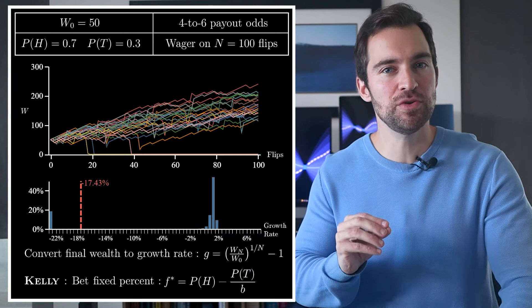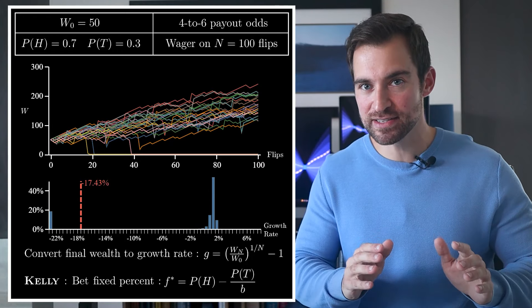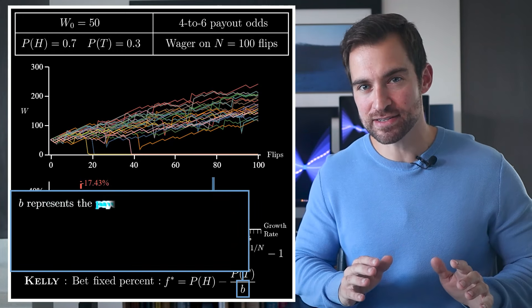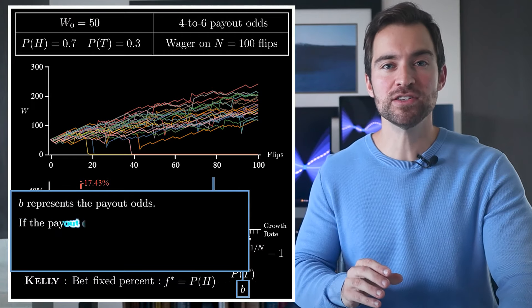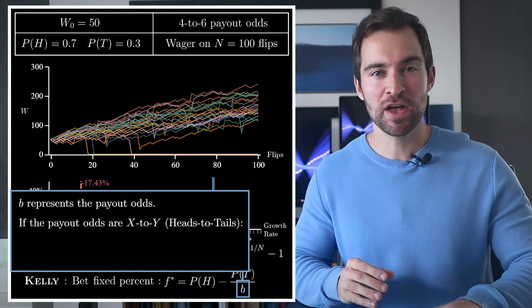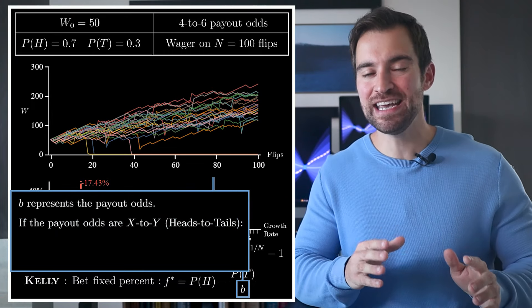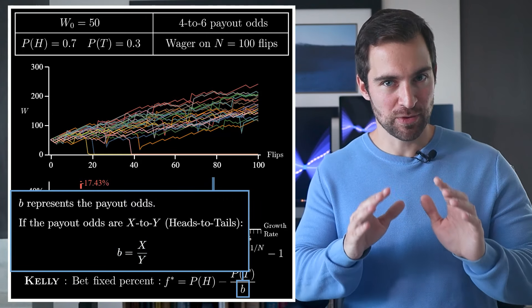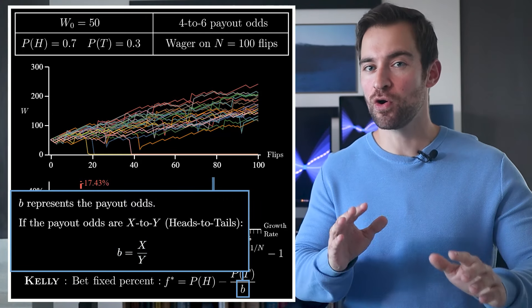Second, that fixed percent is given by this equation. It's a function of only two things, the probability of heads and B, which represents your odds. Basically, if your payout odds are quoted as X to Y for heads to tails, B is X over Y. So in our case, it's four over six or two thirds.